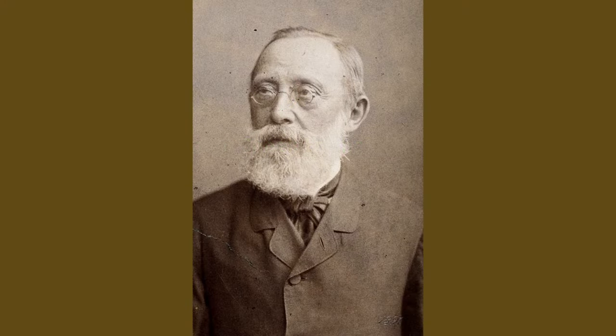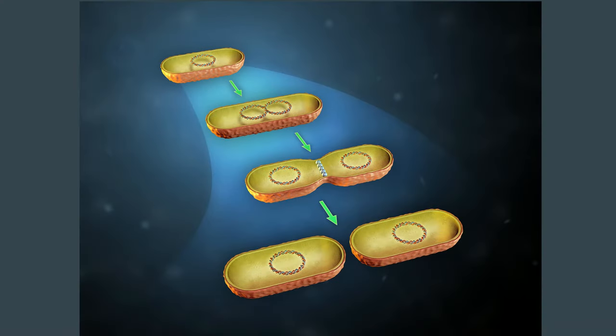In 1855, Rudolf Virchow added the third tenet to the cell theory when he proposed that all cells come from pre-existing cells. Again, this was a bold statement.